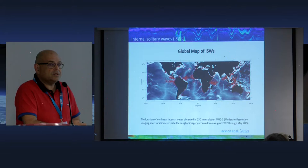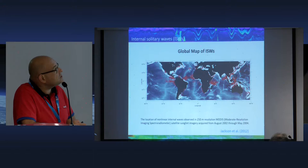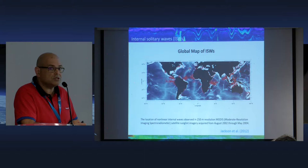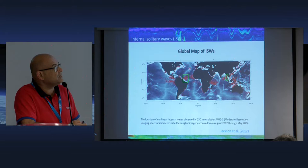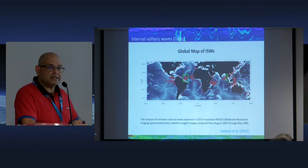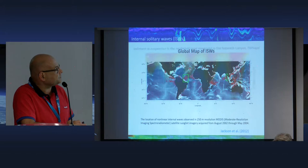What you're seeing right now is a map with the world distribution of solitons in the ocean, produced using about two years of data from MODIS. The case studies we're going to see this afternoon are from the tropical Atlantic off the Amazon River, and also from the Andaman Sea — a place in the tropical oceans where there are very large non-linear internal waves that can reach easily 100 meters in amplitude.